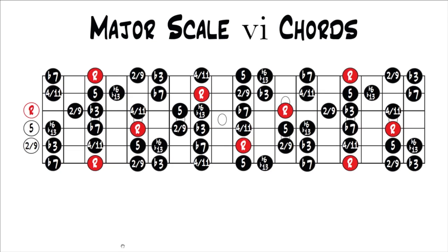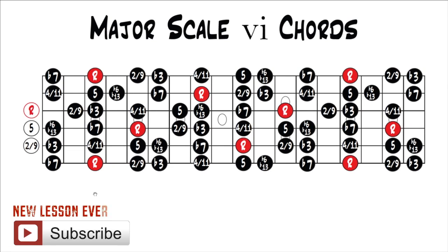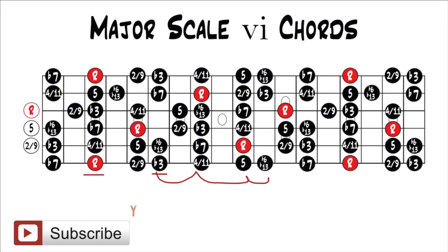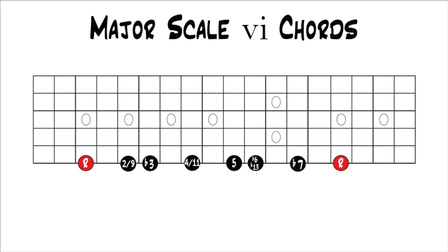We're going to do it the same way that we've been doing it this whole time. We've rearranged the major scale to have the sixth note as the root now, and all the other intervals are corresponding to this new root. If this was the original major scale, the root would be right here, and you'd have your whole step, whole step, half step, and so on. Then we're going to move it all to one string and look at what chords can be built off of this note, which is the sixth note of the major scale.